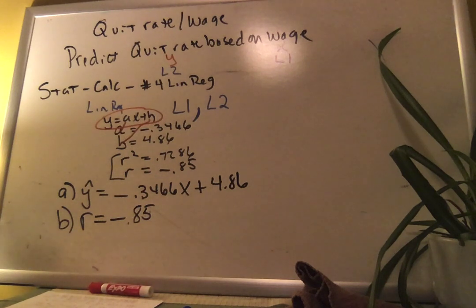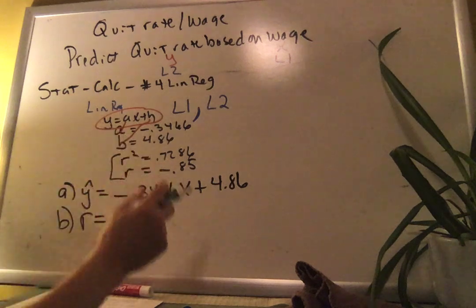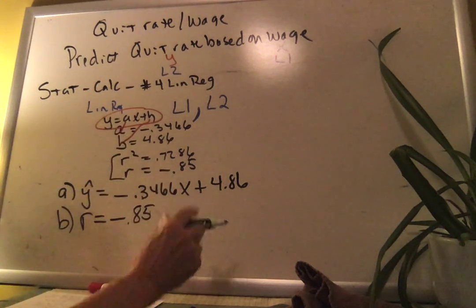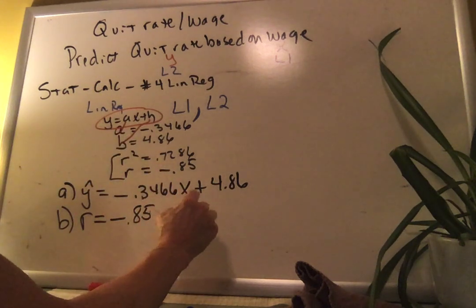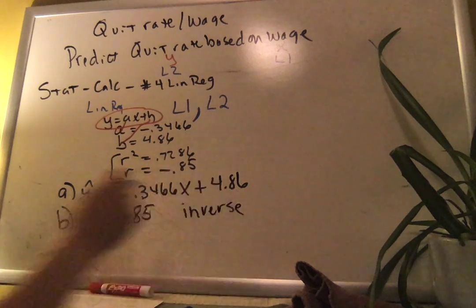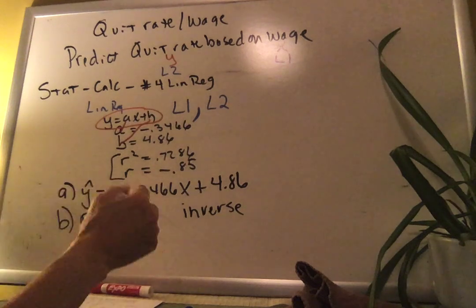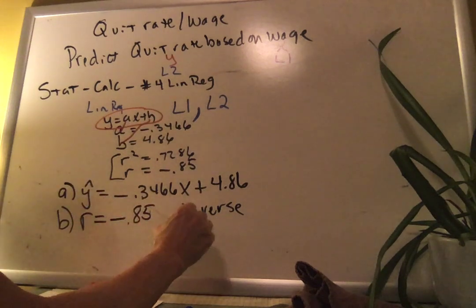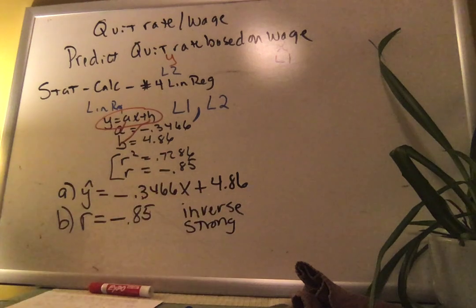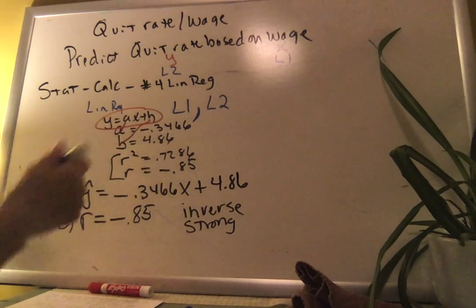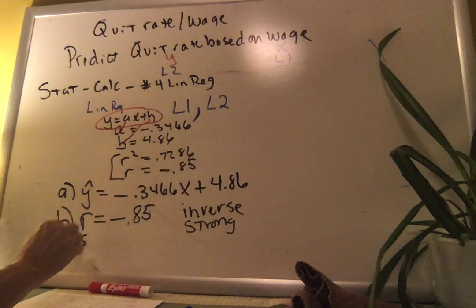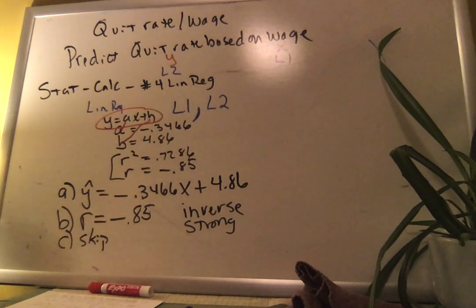Part B asks for the correlation coefficient and an interpretation. The interpretation is simple — I only need two things: tell me if it's positive or inverse, and tell me if it's weak, moderate, or strong based on the number line we put up earlier. This one is strong inverse, so 'strong inverse' is all I need.